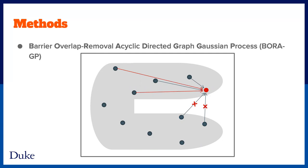We call this Bora GP. We remove directed edges if they overlap barriers, and instead find other points whose directed edge to the red point doesn't cross the barrier. Bora GP is scalable and accounts for the geometry of the domain.